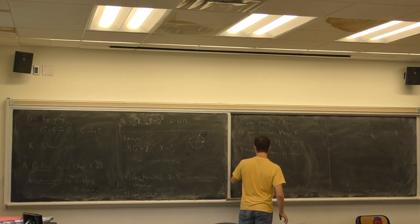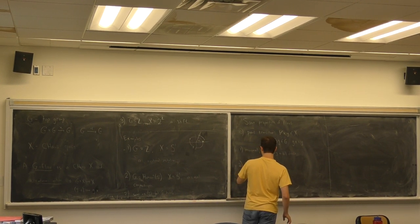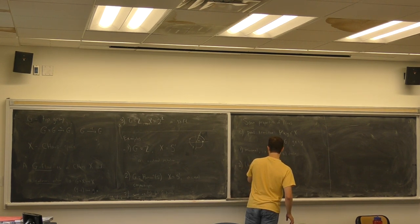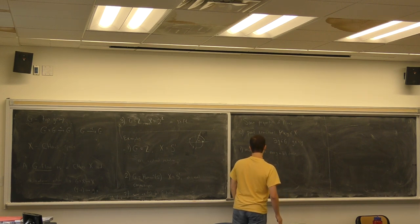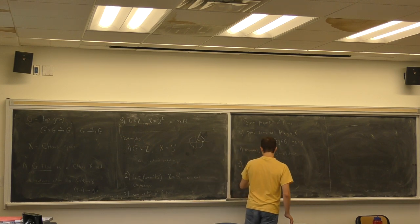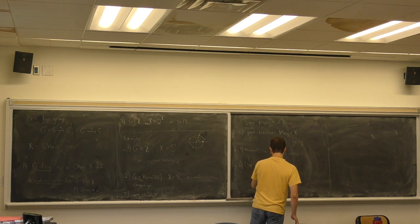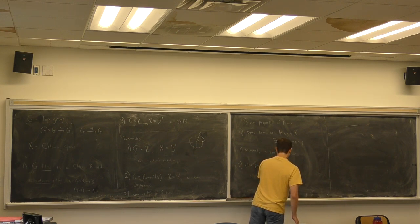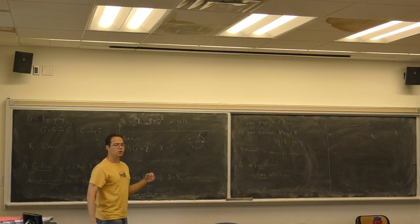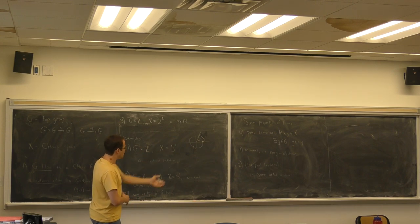This is topologically transitive. So 1 said every orbit was dense. So 2 is going to weaken that to say some orbit is dense. So it's clear that that's a weakening of 1, which is in turn a weakening of 0. 2 is the weakest of these notions.